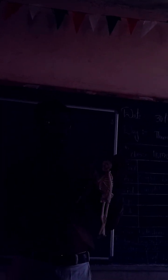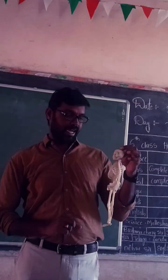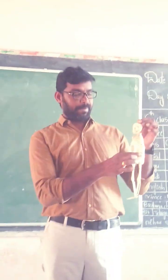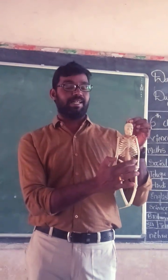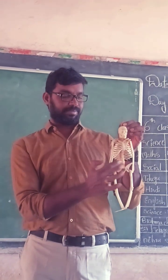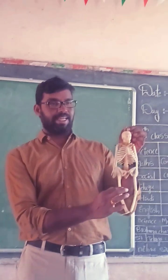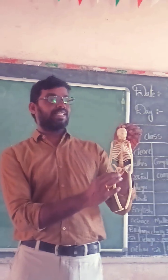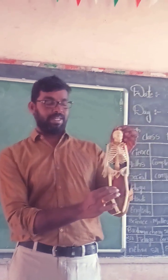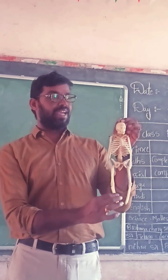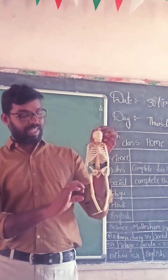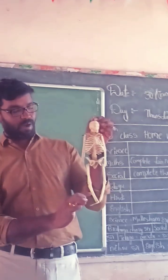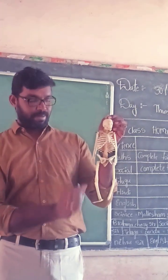The lower bones of the arm are the forearm bones. Bones present in the hip part are called the pelvic girdle. The thigh bone is in the upper leg. Below the thigh we can see calf bones, and between the thigh bone and calf bones we have the knee bones.